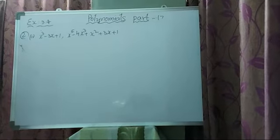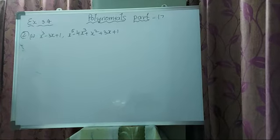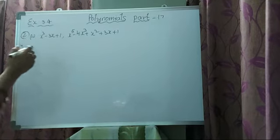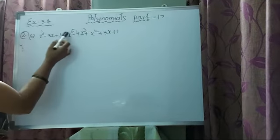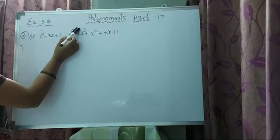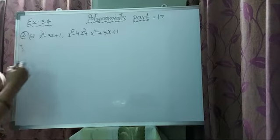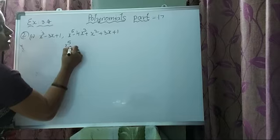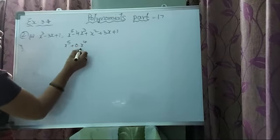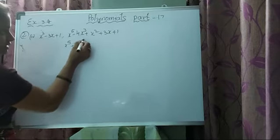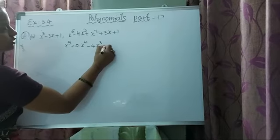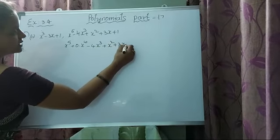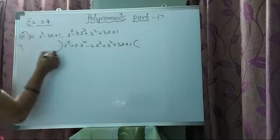Good evening children. In the previous session we discussed up to the second one. Now we have to see whether the third one is a factor or not. Before going to division, the order of the degree should be in decreasing order. Here degree 5 is there but degree 4 is missing, so you have to put 0 times x power 4. So we write x power 5 plus 0 times x power 4, then minus 4x cube plus x square plus 3x plus 1.